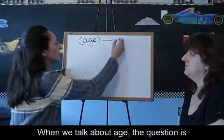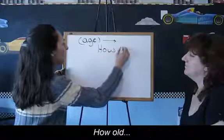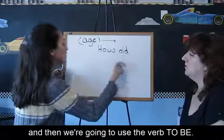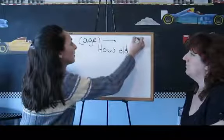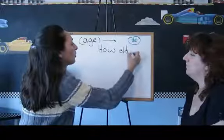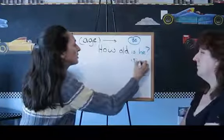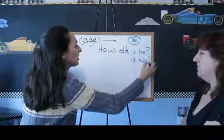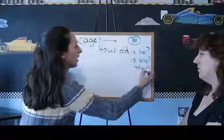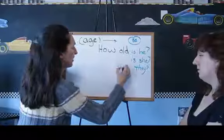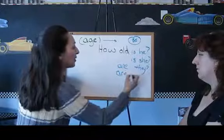When we talk about age, the question is: How old? And then we're going to use the verb to be. How old is he? How old is she? What if we say they? How old are they? How old are you?